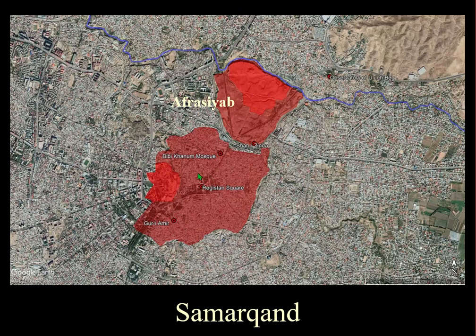Samarkand has such a romantic sound to it — somewhere I thought I'd love to go in my youth. But I've been there and it's a dump. It was completely destroyed by the Russians — turned into a Soviet satellite city — although there are some traces of the jewels of Timurid architecture.